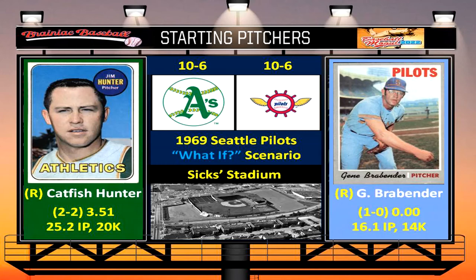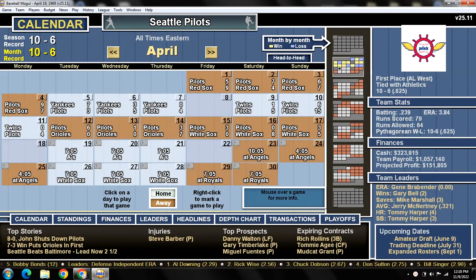Hey everybody, welcome back to Brainiac Baseball's 1969 Seattle Pilots What-If Scenario. Today's matchup features the Oakland Athletics versus the Seattle Pilots at Six Stadium. On the mound for the A's today is Jim Catfish Hunter, whose record is 2-2 with a 3.51 ERA. And pitching for the Pilots today is Gene Brabender, whose record is 1-0 with a 0 ERA.